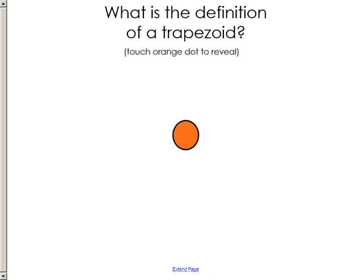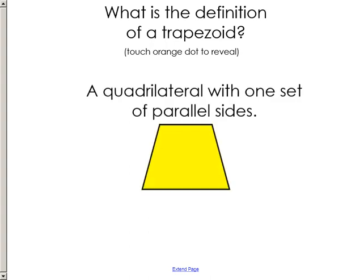Today we're going to talk about finding the area of a trapezoid, but first let's review what a trapezoid is. A trapezoid is a quadrilateral — meaning it has four sides — with one set of parallel sides, not two sets, just one. Parallel means they would never meet if continued forever. The little arrows like that are the symbol that means parallel.